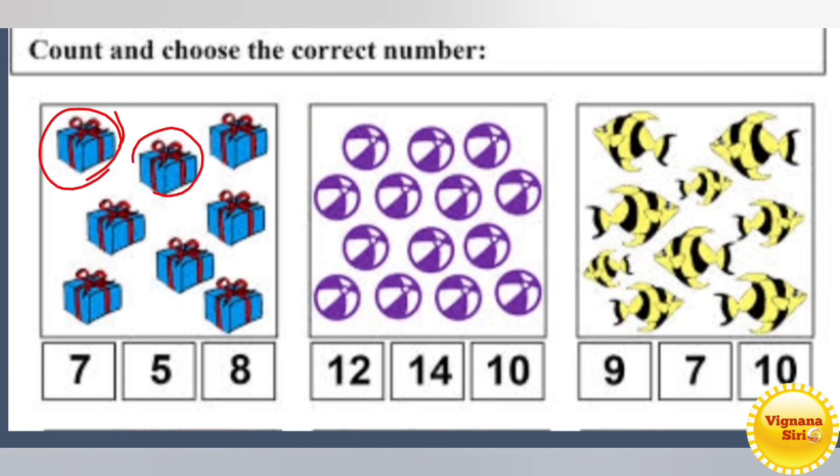1, 2, 3, 4, 5, 6, 7, 8. Yes, total. So how many boxes are there? Gifts are there? Total 8, right? So we have to circle number 8.